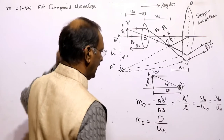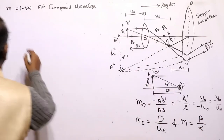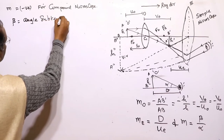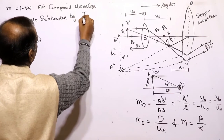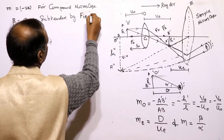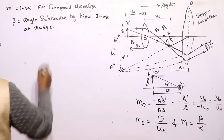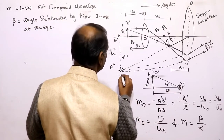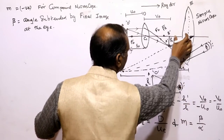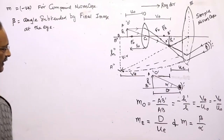M equals d by u-e is the magnification of the eyepiece. The total magnification equals beta by alpha. Beta is the angle subtended by the final image at the eye. Since beta is a very small angle, beta approximately equals tan of beta. Tan beta equals A-dash B-dash divided by B-dash C2, which equals h-dash divided by u-e.